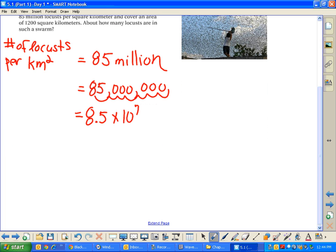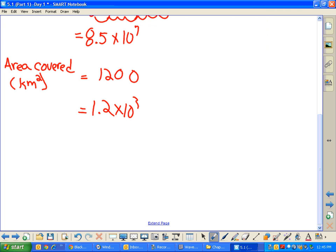Is there any other information you were able to pull out of this word problem? Yeah, the area covered, and this is in square kilometers, is equal to 1,200. And again, today's about scientific notation. So, I guess my question is, what is this number in scientific notation? 1.2 times 10 to the 3rd. Good. So, I think you guys have hit the limit on what I know about the problem. What do I not know in this problem? Or what am I trying to find? Yeah, our total number of locusts. We don't know that.